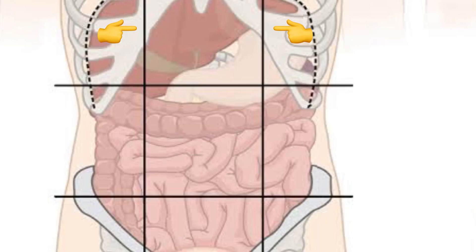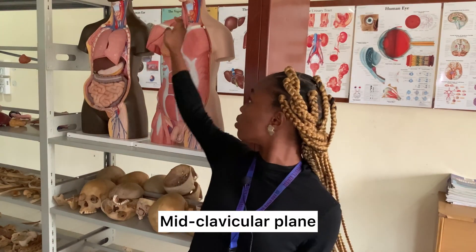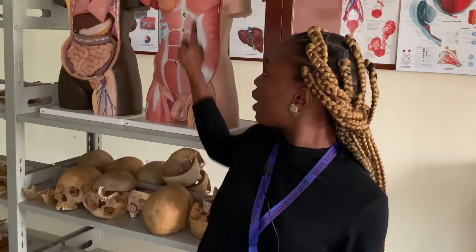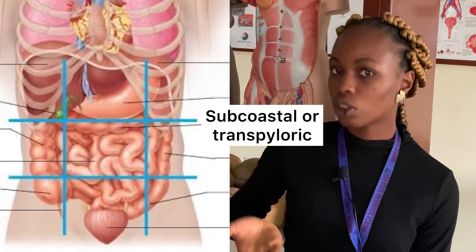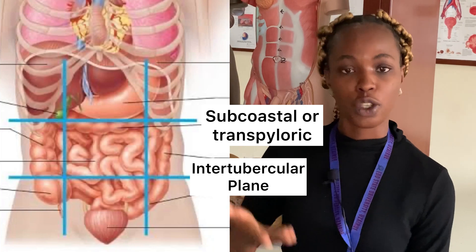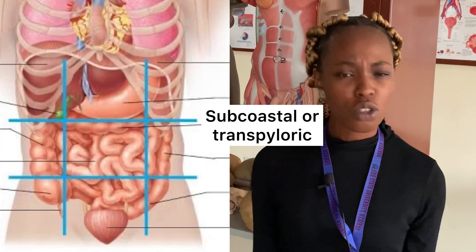Moving to the regions — there are nine regions, divided by four lines. We have two parasagittal planes, called the mid-clavicular planes, running close to the clavicle. Then there are two transverse planes: the subcostal plane, just underneath the tenth rib, and the intertubercular plane, at the lower border of L5.